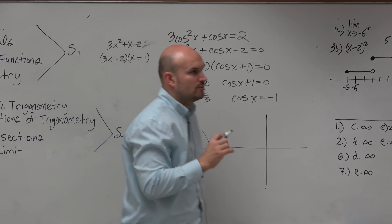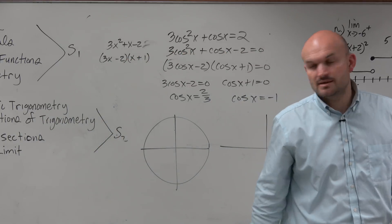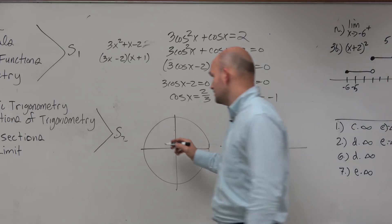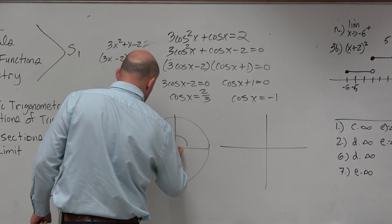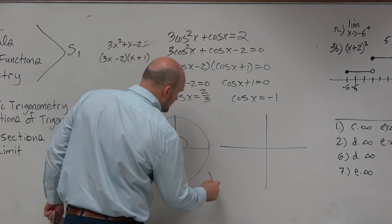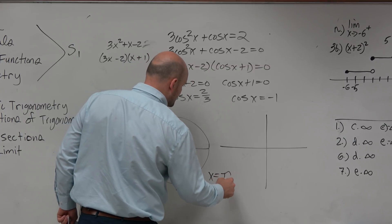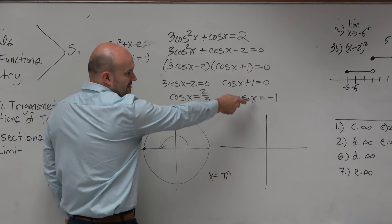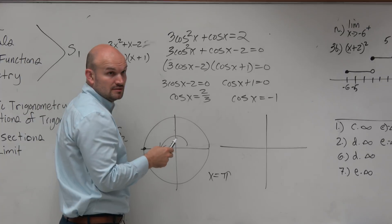Between 0 and 2 pi, when is cosine equal to negative 1? On the unit circle, when is the x coordinate equal to negative 1? Pi. So when x is equal to pi, that is a cosine that's equal to negative 1. Do you guys agree? Yeah. That's it.